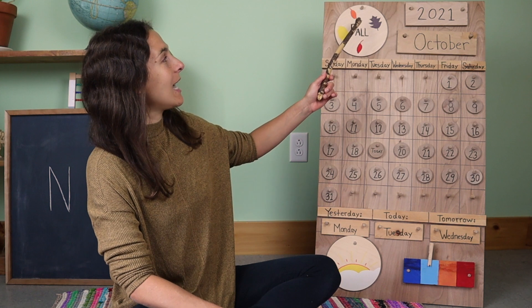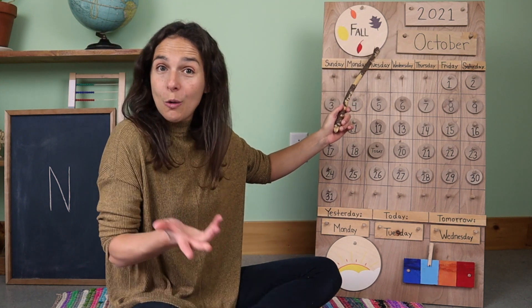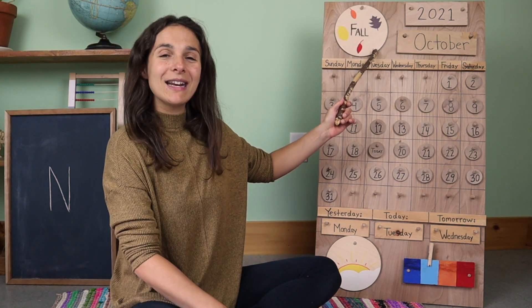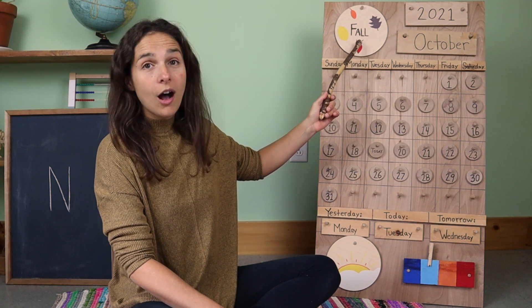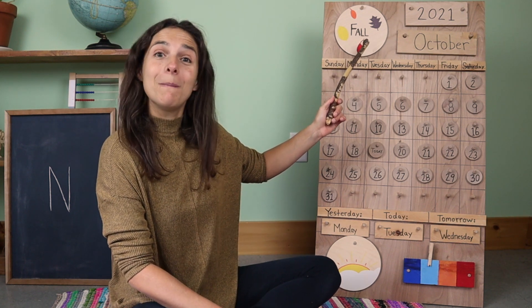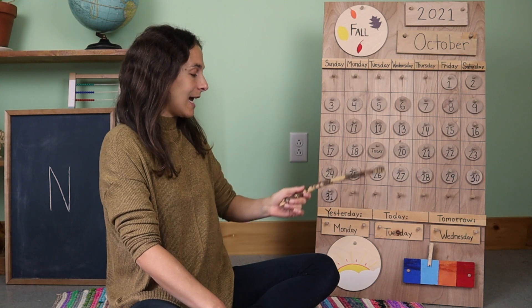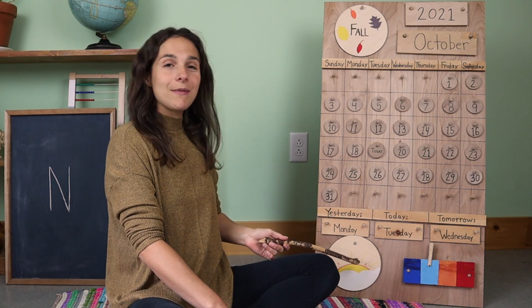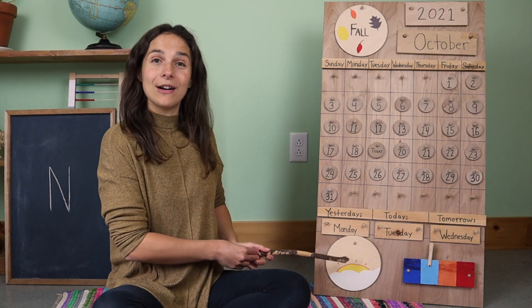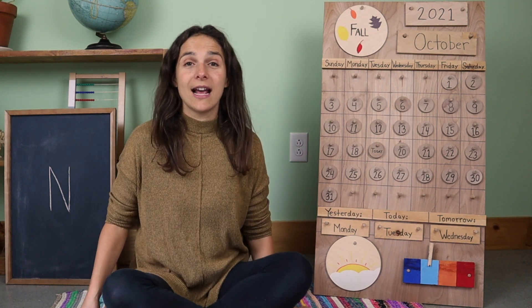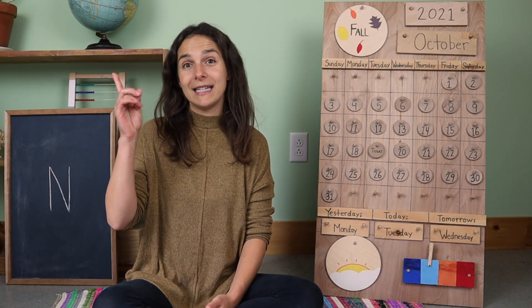Up at the top of the chart, we have the season. What's the season right now, friends? Autumn. But you can also say fall. Down at the bottom of the chart, we have a picture of the weather. Let's sing the weather song together, and then we can share what we see outside.